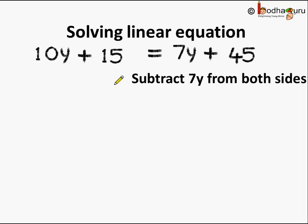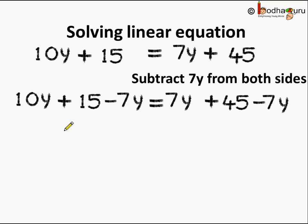We do this so that the variable y is left only on one side of the equation not on both sides. So let us do this. 10y plus 15 minus 7y is equal to 7y plus 45 minus 7y.